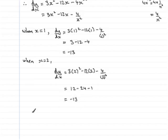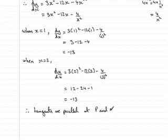Therefore I can see that because the gradients are the same, I know that the tangents are parallel at P and Q. So therefore tangents are parallel at P and Q because they both essentially have the same gradient, negative thirteen.